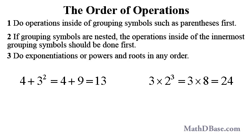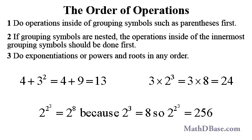Stacked exponents should be evaluated from the uppermost down. 2 to the 2 to the 3rd is equal to 2 to the 8th, because 2 to the 3rd is equal to 8, and so 2 to the 2 to the 3rd is equal to 256.